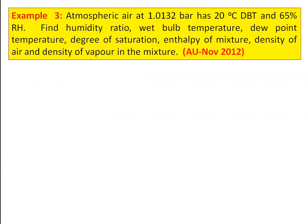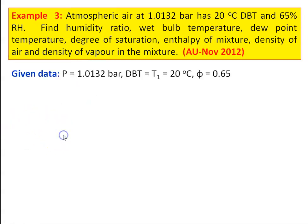Example 3: Atmospheric air at pressure 1.0132 bar has a dry bulb temperature of 20°C and 65% relative humidity. Find the humidity ratio, wet bulb temperature, dew point temperature, degree of saturation, enthalpy of the mixture, density of air, and density of water vapor in the mixture. This is from the November 2012 question paper. Given: P = 1.0132 bar, T1 = 20°C, relative humidity φ = 65% = 0.65.